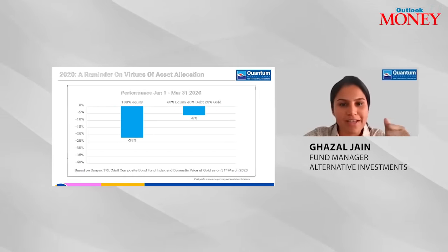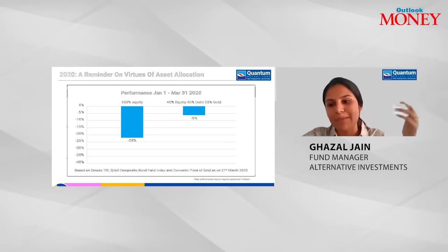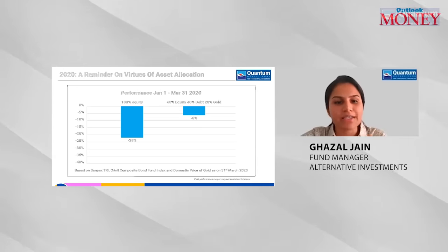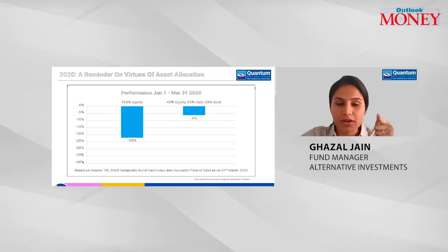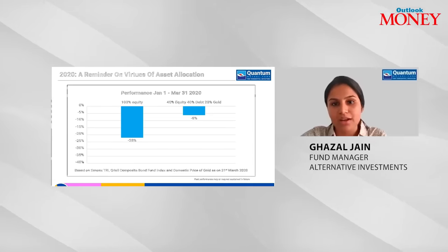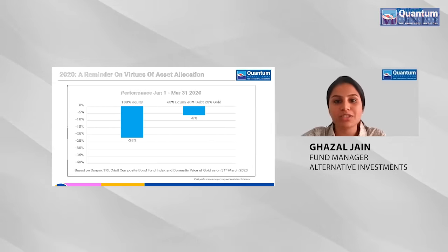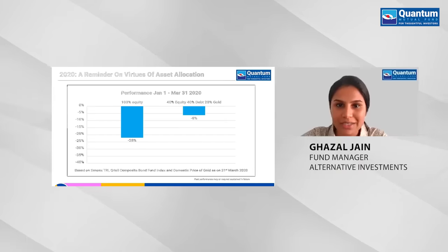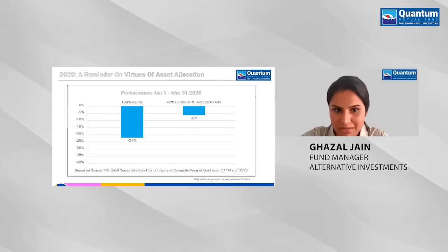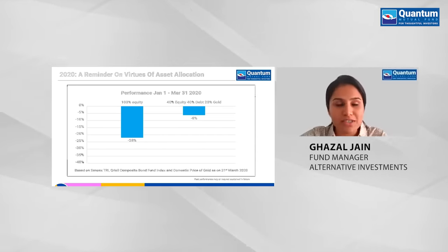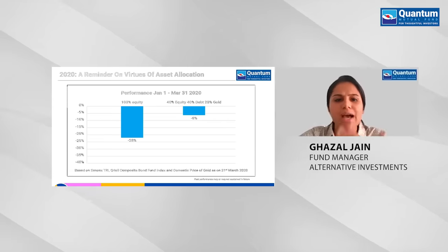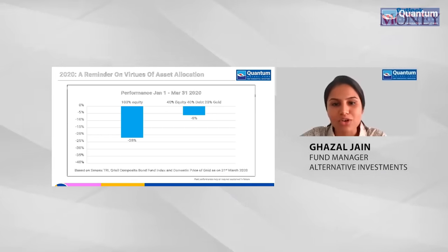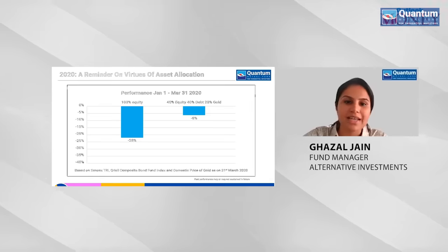We tend to forget the ups and downs markets have given. When equity markets do well, we all get excited and want to jump on the bandwagon. But during COVID-19, when the pandemic was declared in March-April 2020, someone with 100% of their money in equities would have seen their portfolio fall by about 30% — 100 rupees would have become just 70. On the other hand, someone with a 40-40-20 allocation to equity, debt, and gold would have limited their loss to just 8%. That is the difference asset allocation can make.